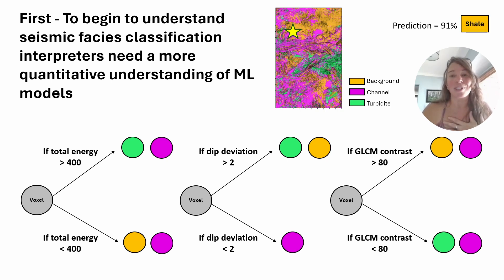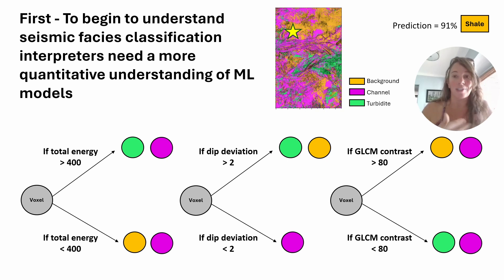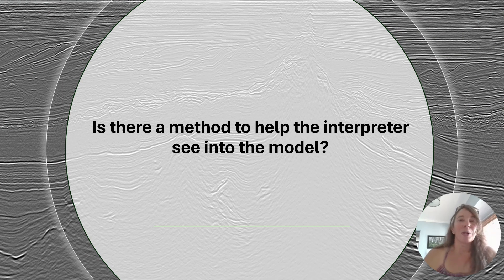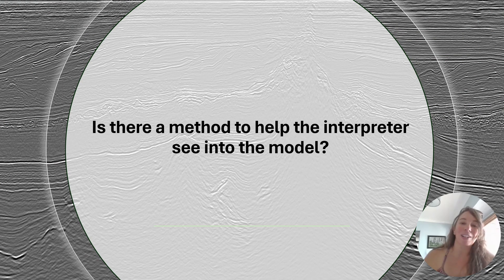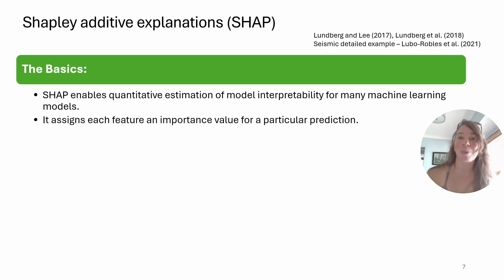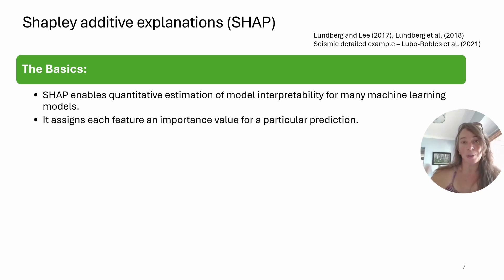This is really key for seismic interpreters. Other things we'd like to see from our machine learning algorithms are, for instance, that we're predicting a 91% chance that this voxel is shale. We can work through it in a very tedious mathematical, voxel-by-voxel localized method. But I'm talking about SHAP — is there another method to help the interpreter see into the model? Yes, it's the SHAP method. SHAP stands for Shapley Additive Explanations. It's a really great model-agnostic algorithm that's freely available — they've got a GitHub, readme files, all of that, so I encourage you to try it out.